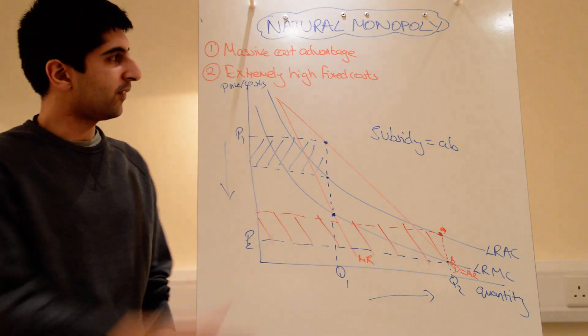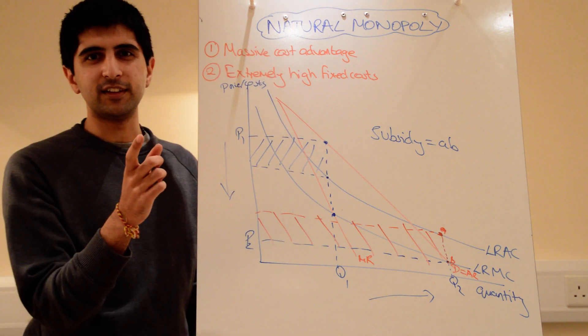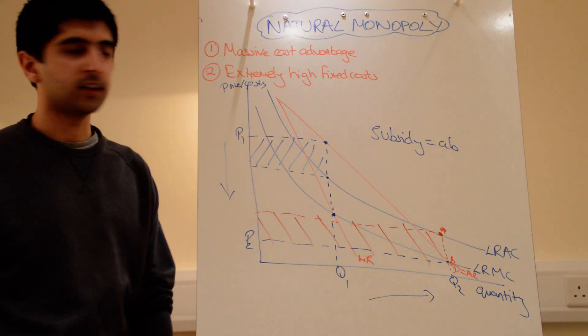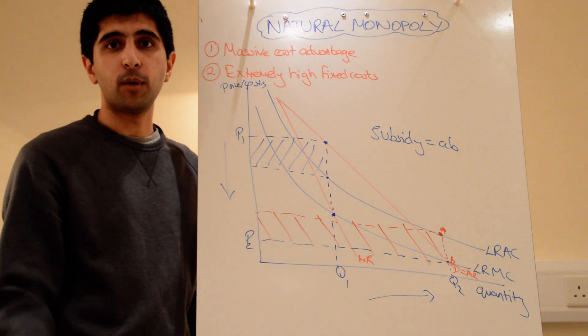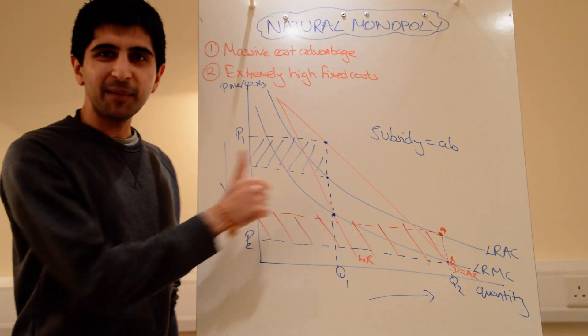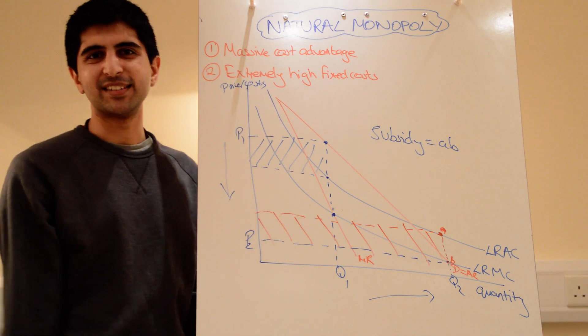So, this is the unique case of natural monopoly. Very simply, massive cost advantage because there are huge fixed costs. It makes sense for there only to be one firm operating. Hope that makes sense for you. A very interesting case. See you next time.